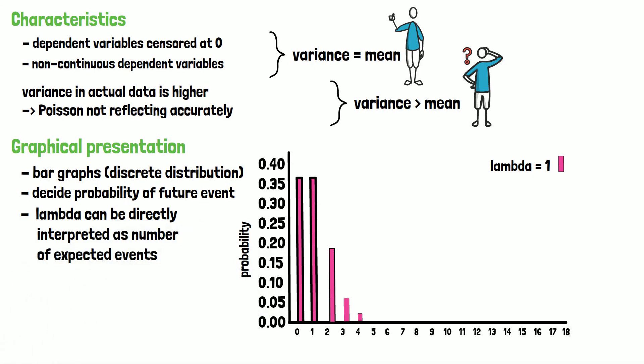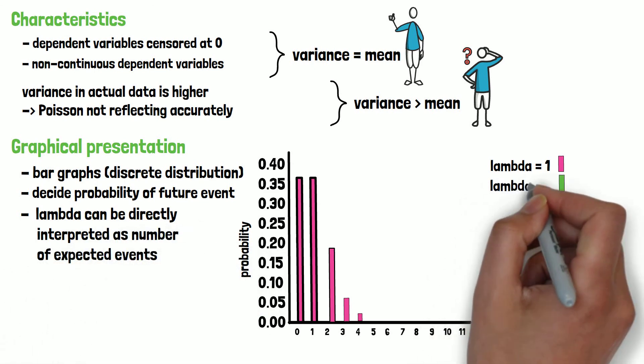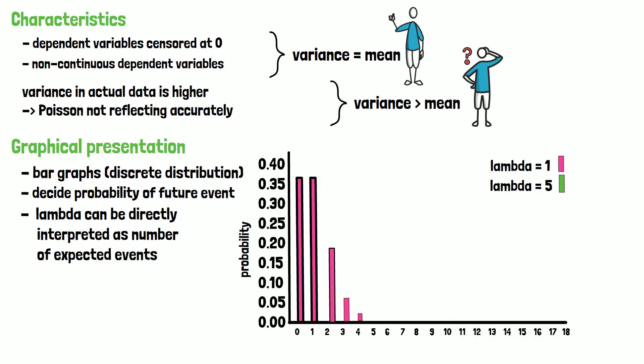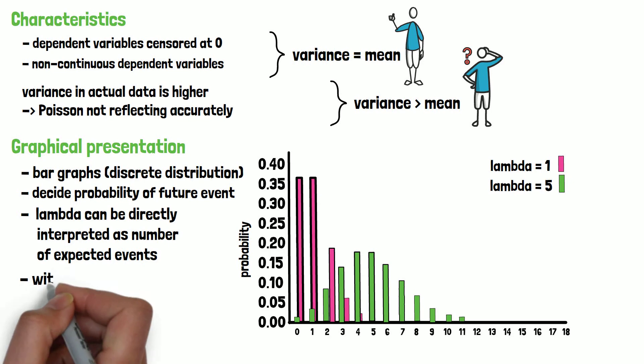For example, in a certain time frame. It becomes clear that with increasing number of events, the Poisson probability distribution more and more approximates a normal distribution.